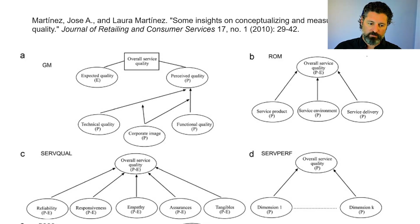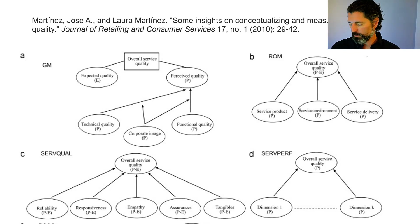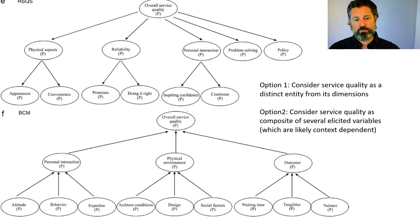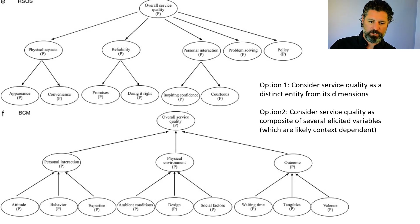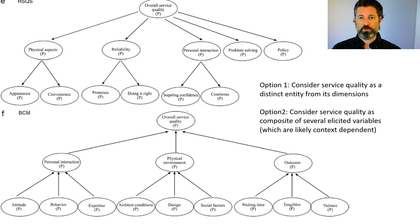The ServQual or RATER framework was developed by Parasuraman, Valerie Zeithaml, and Lynn Berry, who identified reliability, responsiveness, empathy, assurance, and tangibles as key dimensions. Others have proposed different components such as attitudes and behaviors, ambient conditions, social factors, waiting time, tangible things, and the valence of the outcome. There has been significant effort trying to figure out the most important things in determining good service.